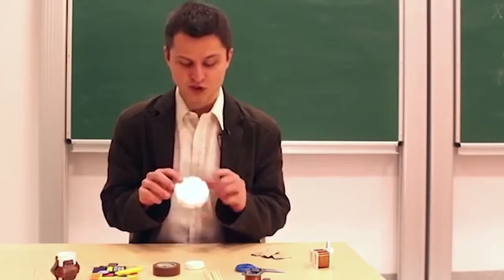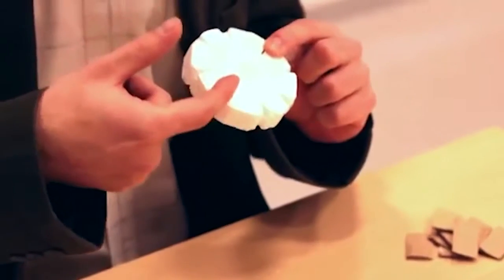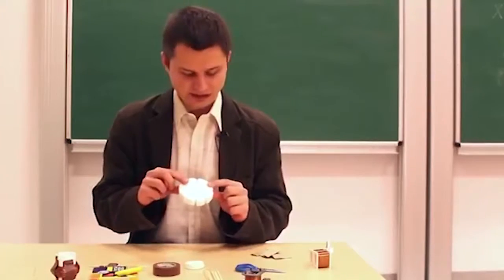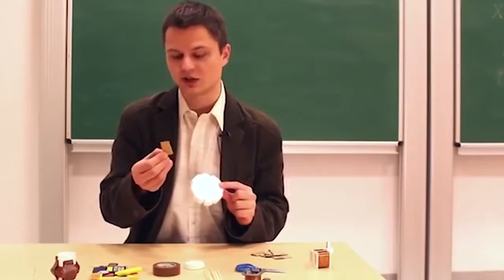We take the styrofoam disc, divide it up into eight parts, and cut a slit in each of these. Then we insert small, rectangular bits of cardboard, measuring approximately 4 by 2 cm into the slits.